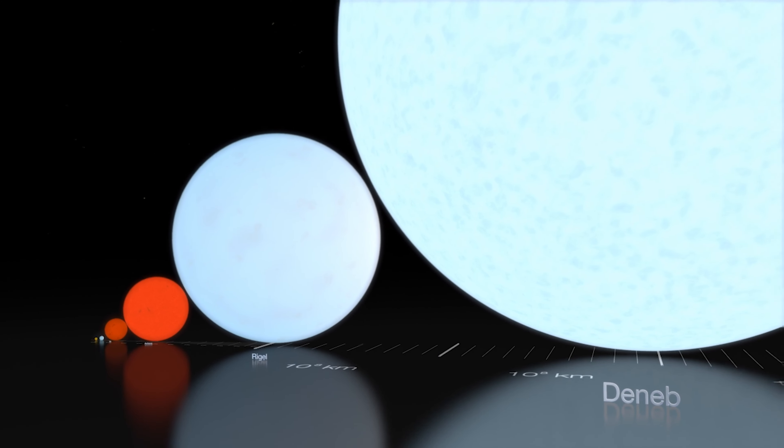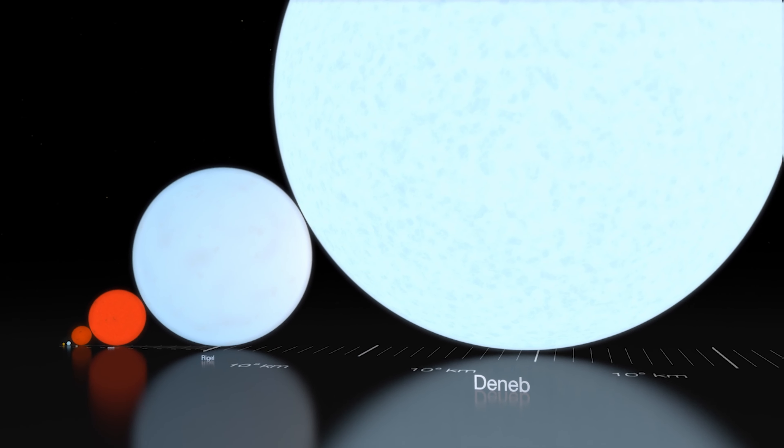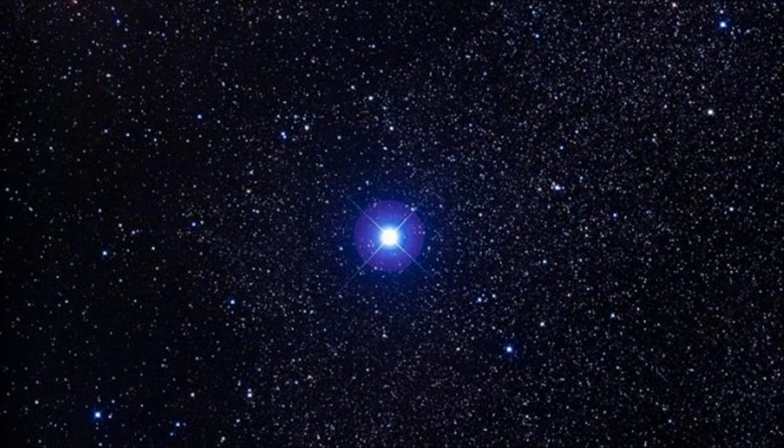Deneb is a bluish white supergiant around 200 times the size of the Sun and around 19 times more massive. Burning through its fuel at a rapid rate, Deneb shines bright in the constellation Cygnus.